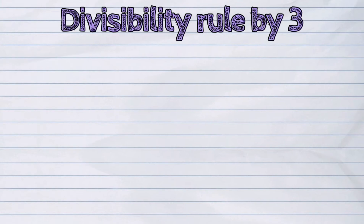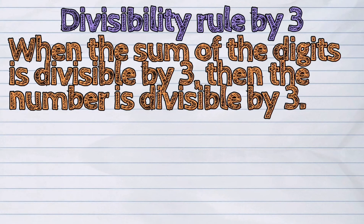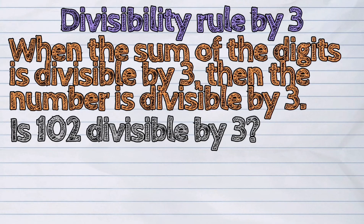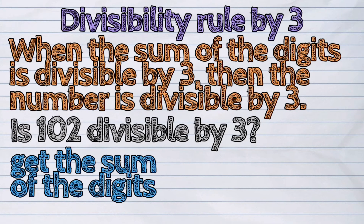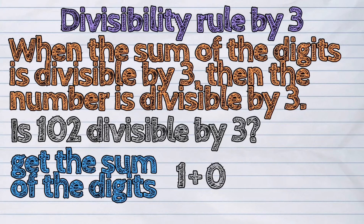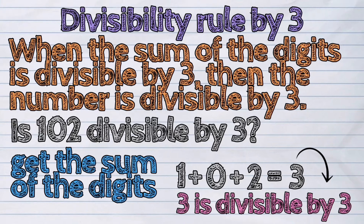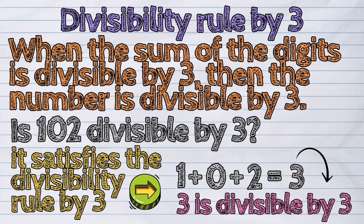Divisibility rule by three: when the sum of the digits is divisible by three, then the number is divisible by three. For example, let's check if 102 is divisible by three. The sum of the digits: one plus zero plus two equals three. Three is divisible by three, so it satisfies the divisibility rule by three.